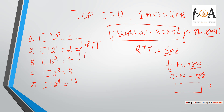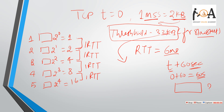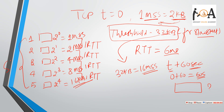Each successive congestion window takes 1 more RTT. Since 1 MSS equals 2KB, the threshold of 32KB creates 16 MSS (32KB ÷ 2KB = 16). So the congestion windows under slow start go from 1 MSS, 2 MSS, 4 MSS, 8 MSS, up to 16 MSS — this entire part is under slow start.